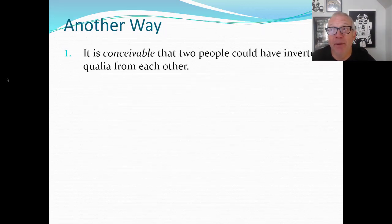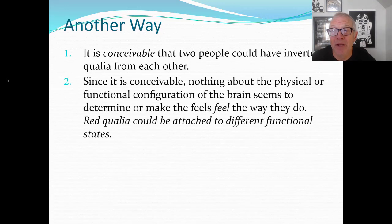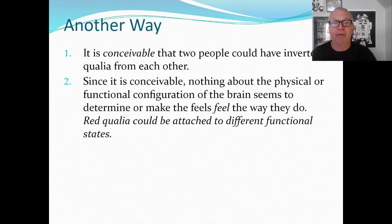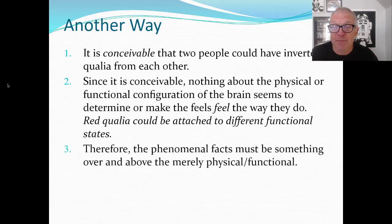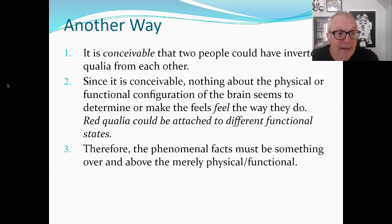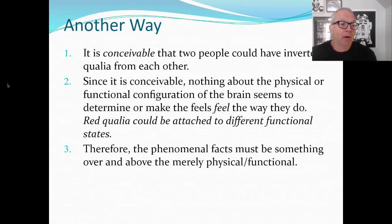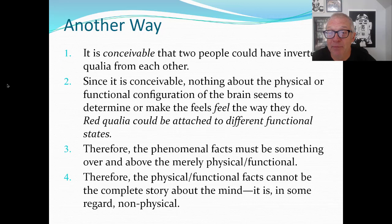To put it another way: it's conceivable that two people could have inverted qualia from each other. Since it's conceivable, nothing about the physical or functional configuration of the brain seems to determine how the fields actually feel. Red qualia could be attached to different functional states and the person would be just as functional. Therefore, the phenomenal facts must be something over and above the merely physical or functional. The physical functional facts cannot be the complete story about the mind.